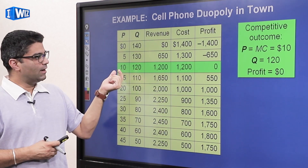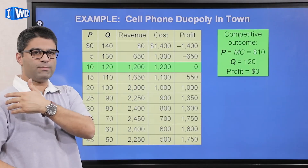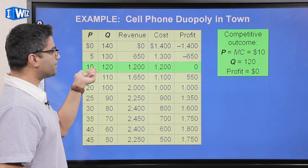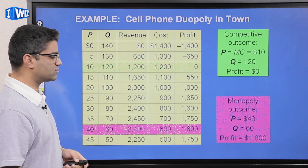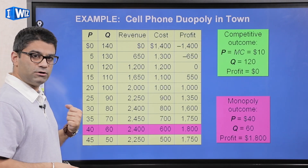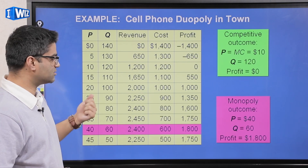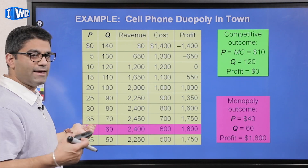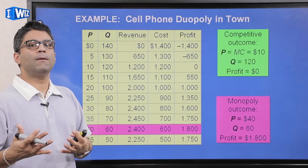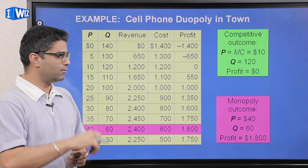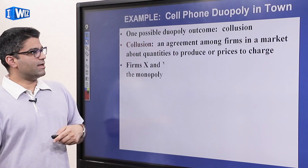Under perfect competition, MC equals price, so price equals 10 and profits are zero in the long run. The market produces 120 units, which firms divide amongst themselves, charging a price of 10. For a monopolist, production is where profits are highest: the monopolist charges $40, sells to only 60 consumers, and earns a profit of $1,800 — that's price $40 minus MC $10 equals profit margin $30, times 60 units. Now we'll see where oligopoly fits in.